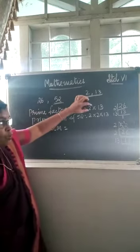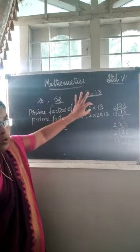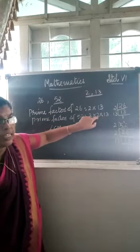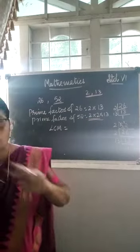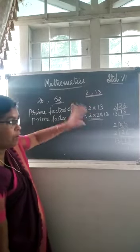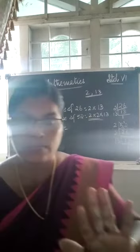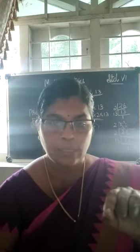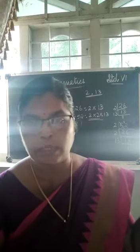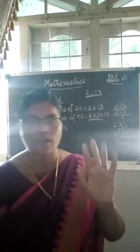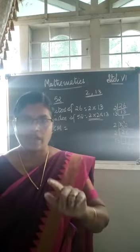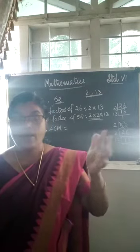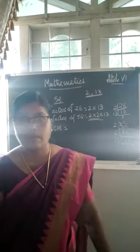See, in 26, the factor 2 comes only 1 time. In 52, 2 comes 2 times — that is the maximum number of times. This is the maximum. So we take 2 times 2. Now 13 is another factor. In 26, 13 comes only 1 time. In 52, 13 also comes only 1 time. So the maximum number of times is 1 time only. We will take only the maximum number of times each factor occurs.